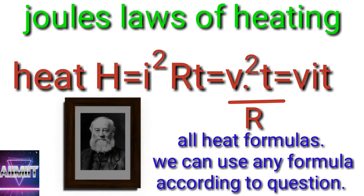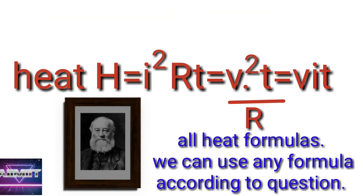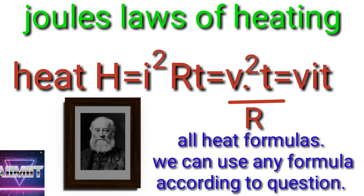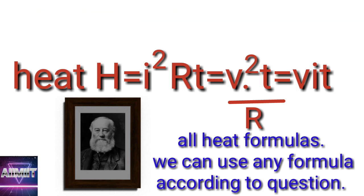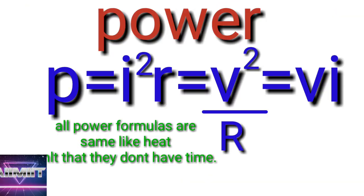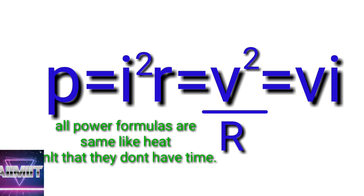Number nine: Heat formulas given in electricity are H = I²Rt, which we call Joule's law of heating. Other formulas are H = V²t/R and H = VIt. Power formulas are P = I²R, V²/R, or VI.